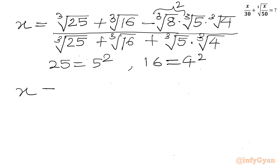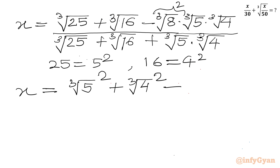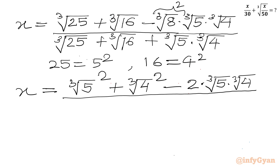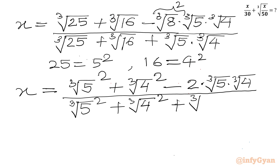So we write x equal to cube root of 5 squared — this is cube root 25 — plus cube root of 4 squared — this is cube root 16 — minus 2 times cube root 5 times cube root 4, over cube root of 5 squared plus cube root of 4 squared plus cube root 5 times cube root 4.